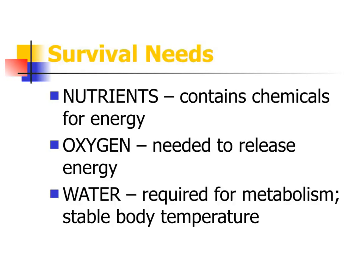There are five survival needs that all living things must have in order to maintain life. Survival needs are things that living things must have in order to survive. The first is nutrients — any kind of food we use for energy. We also need oxygen because without it we cannot release energy from nutrients through cellular respiration. We need water because all chemical processes or metabolism in the body must happen in a water medium, which is why we are 60 to 80 percent water.